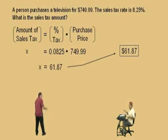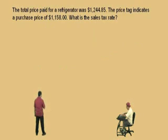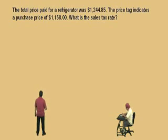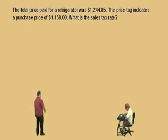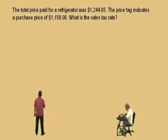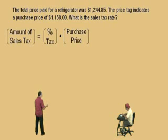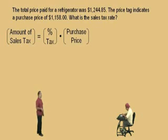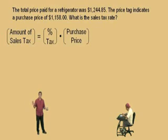Very nice, Charlie. Let's do another one. The total price paid for a refrigerator is $1,244.85. The price tag indicates a purchase price of $1,158. What is the sales tax rate? So here we're looking for the percentage. Here's our equation: the amount of sales tax is equal to the percent tax times the purchase price. In this problem, we do not know the amount of sales tax. We were given the purchase price — the price on the price tag — and the amount paid at the cash register. At the cash register, you pay the purchase price plus the amount of tax.